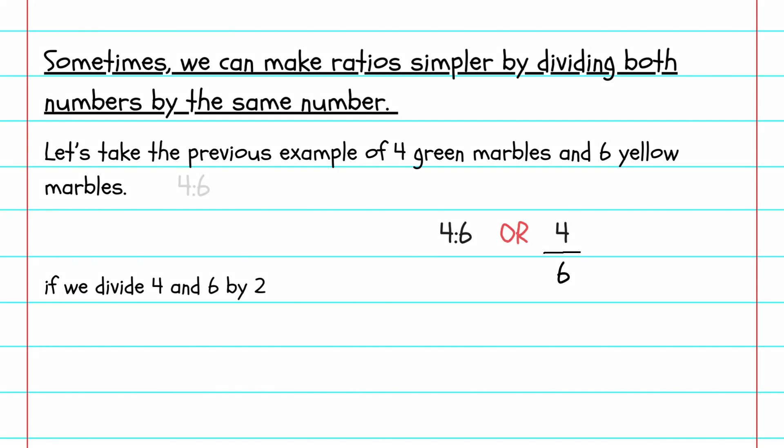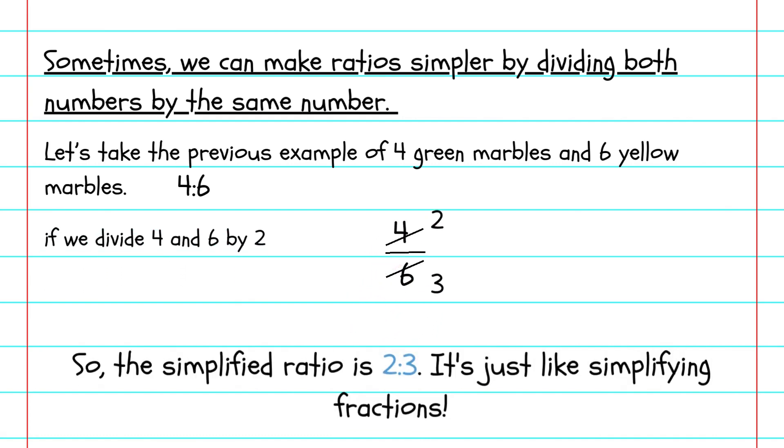As a result, if we divide four and six by two, we get two and three. So, the simplified ratio is 2:3. It's just like simplifying fractions.